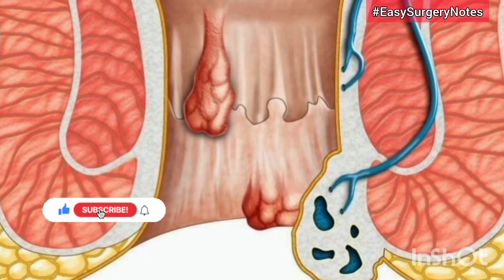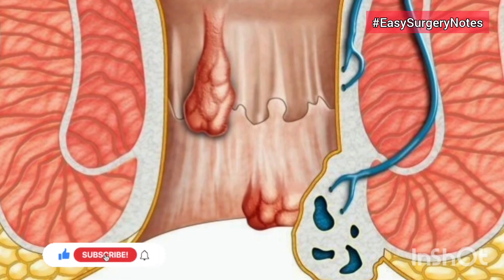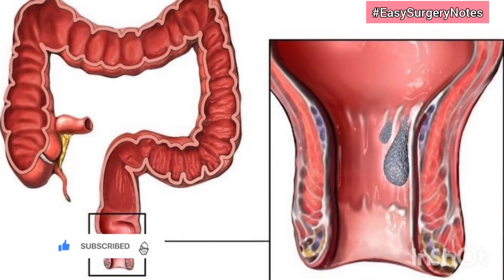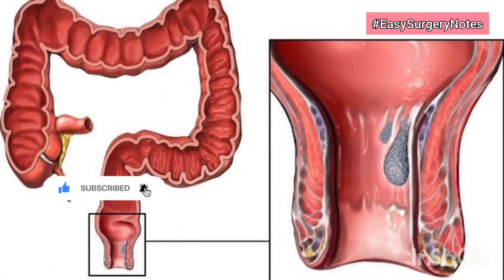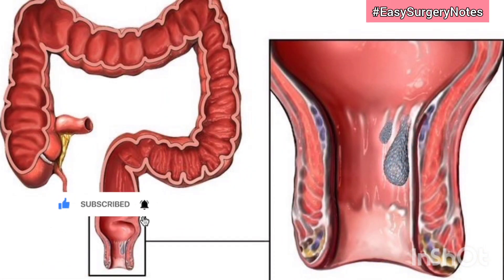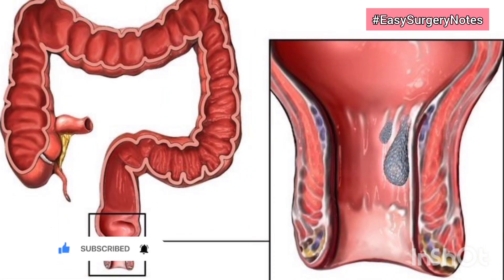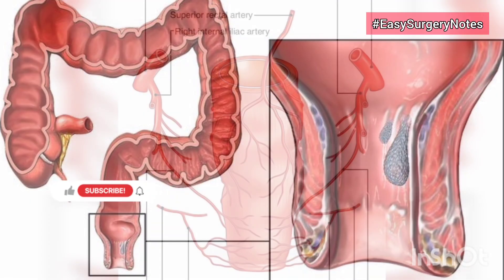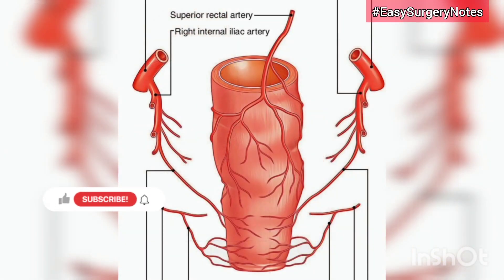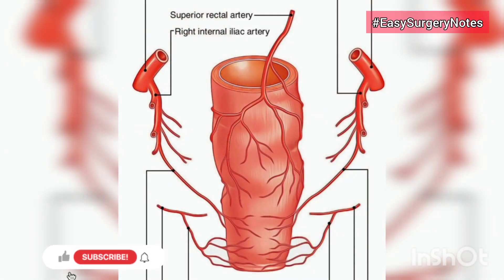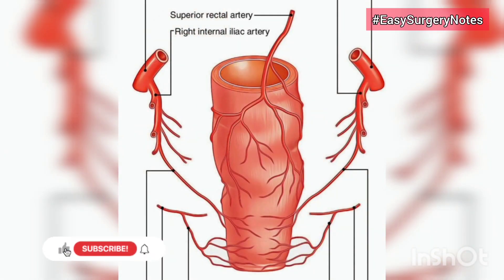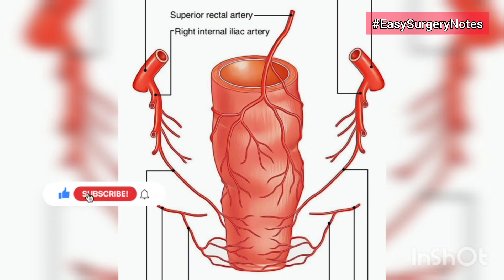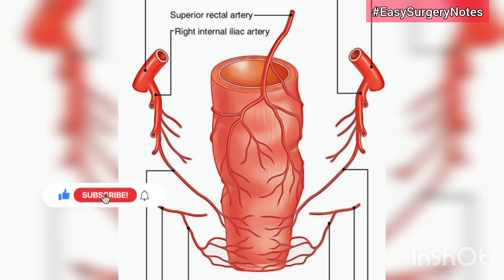Relations of the anal canal: Anteriorly — (1) perineal body in both sexes, (2) membranous urethra and bulb of penis in males, (3) lower end of vagina in females. Posteriorly — anococcygeal ligament and tip of coccyx in both sexes. Laterally — ischio-rectal fossa in both sexes.